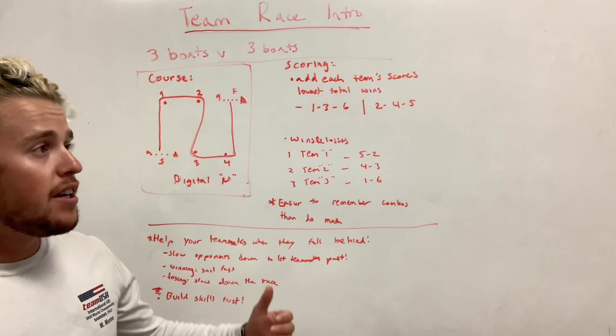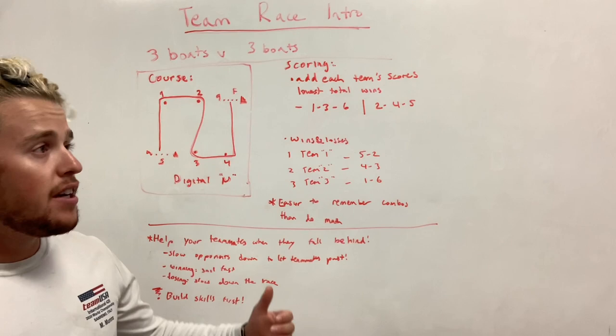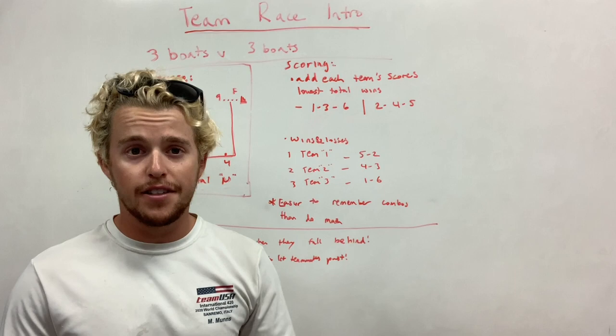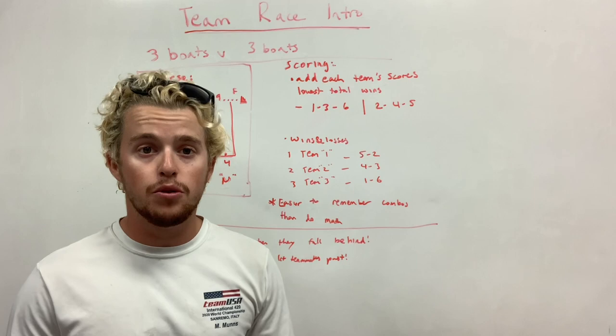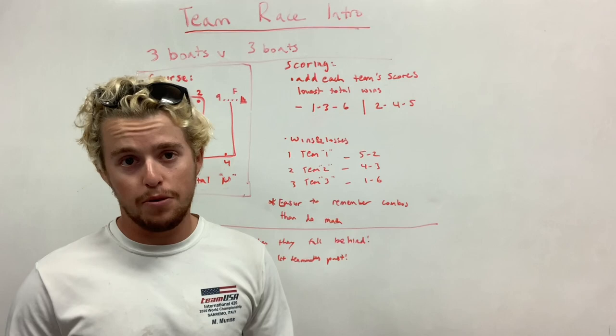First of all, team racing is three boats versus three boats. Some formats of team racing could be two versus two, some could be four versus four, but for what we do in the US in college and in high school, it's three boats against three other boats.